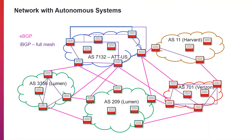The border routers are not directly connected, so they are BGP neighbors — not peers, not discovered, but configured. The BGP neighbors are configured and the connections are created using TCP. Border routers share the information they have learned with their peers in the IGP. BGP routers are getting a lot of routing information from a lot of different sources, and what they need to do is determine the best way to get to a particular route.